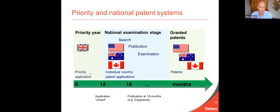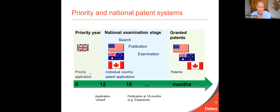You file your individual country patent applications and they will be searched and examined by those individual country patent office examiners. Each of your patent applications will be published at the 18-month stage, well before you're likely to get patents granted. That is part of the quid pro quo of the patent system: in order for a possible monopoly right on your invention in a particular country, you put all details of your invention into the public domain. It's always a risk because you don't know whether you're going to get patents granted. That's the basic system: priority applications, individual country patent applications, individually searched and examined, and individually granted.